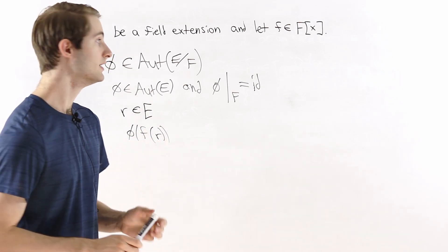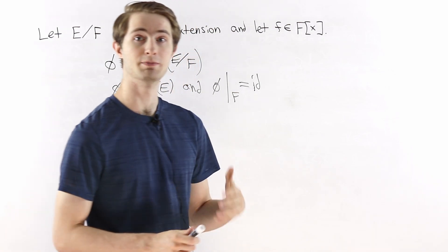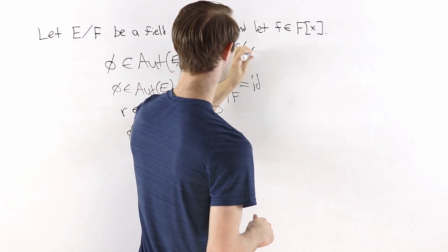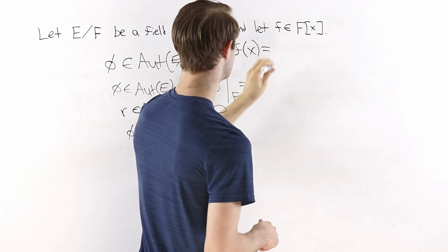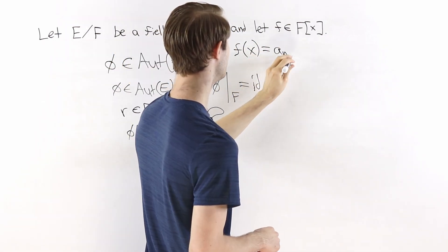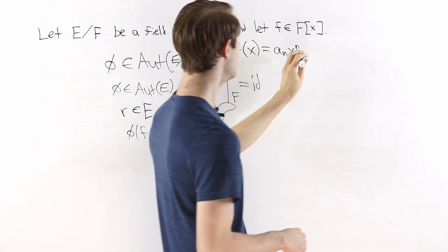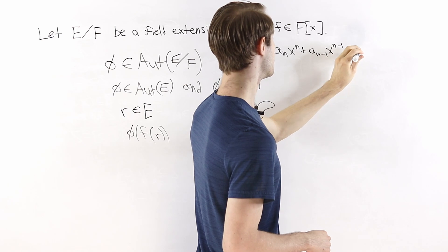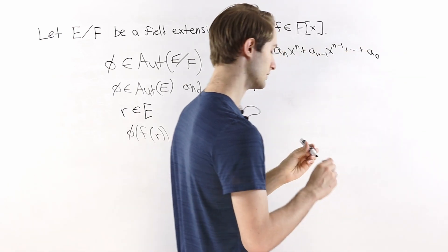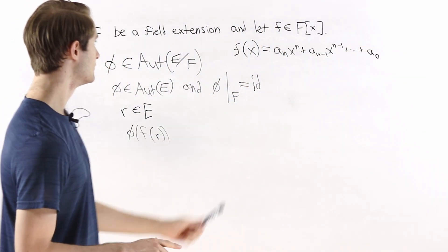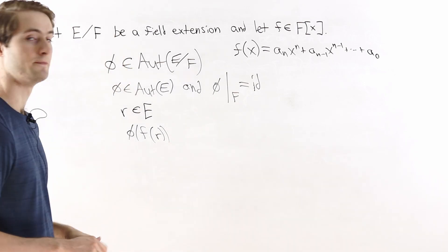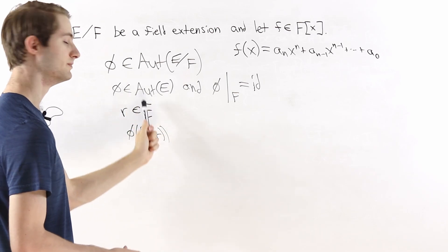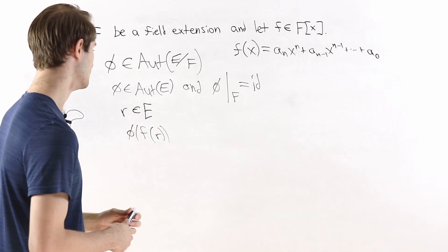In order to compute phi of f of r, let's first make this polynomial more concrete. We can write any polynomial in terms of powers of x. So let's say the first term is a_n times x to the power of n, then a_{n-1} times x to the n minus 1, and so on all the way down to a_0 being the constant term. So we want phi of f of r, and f of r is just this with the value r plugged in.